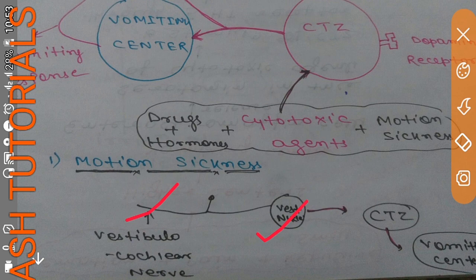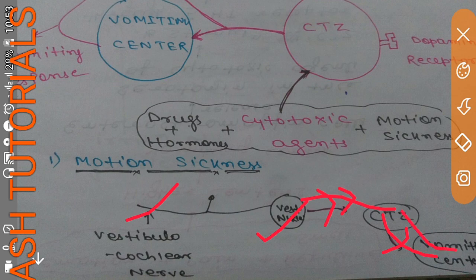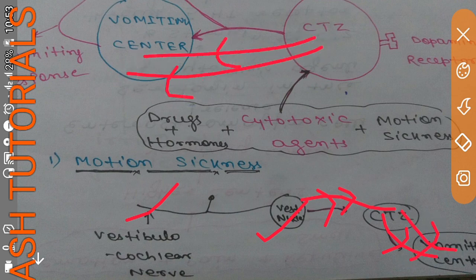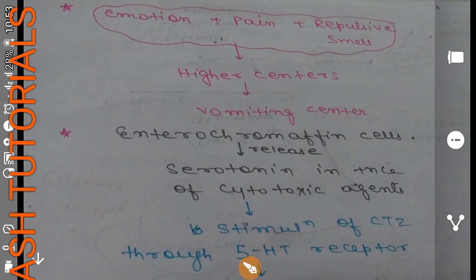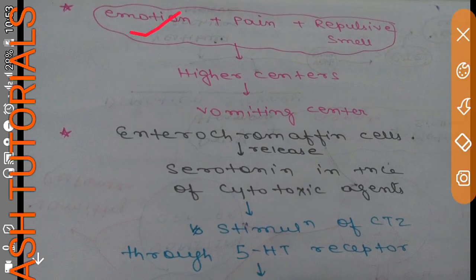From the vestibular nucleus, fibers project to the chemoreceptor trigger zone. Once the CTZ is activated, it passes an impulse to the vomiting center, which leads to the vomiting response. This is the mechanism of motion sickness.